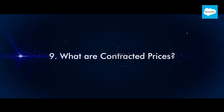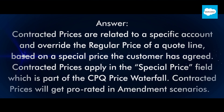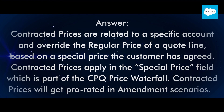Question 9: What are contracted prices? Contracted prices are related to a specific account and override the regular price of a quote line, based on a special price the customer has agreed. Contracted prices apply in the special price field, which is part of the CPQ price waterfall. Contracted prices will get pro-rated in amendment scenarios.